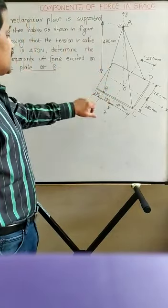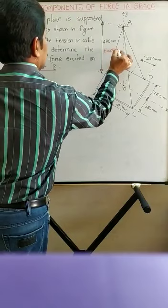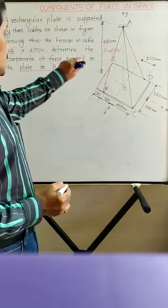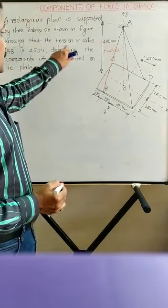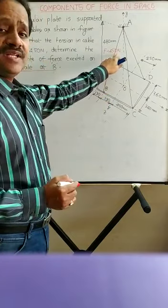The magnitude is 450 N. What is the direction? The tension in cable AB — we have to resolve the components at point B. So the direction of tension is from B to A. But suppose if it is asked to resolve the force of 450 N at point A, then the direction of tension will be from A to B. So this direction is very, very important.